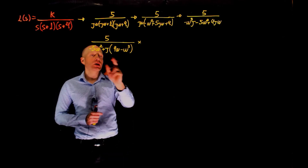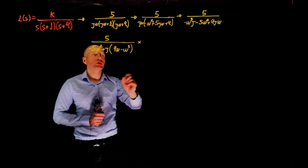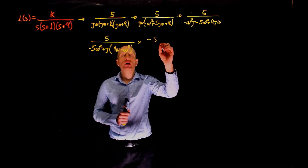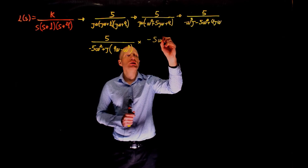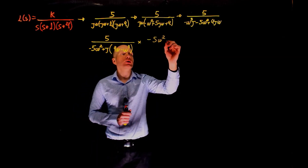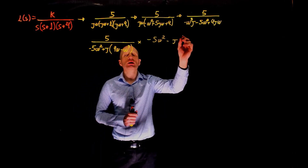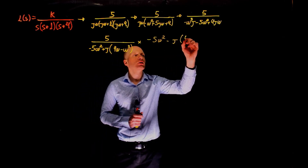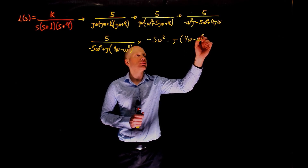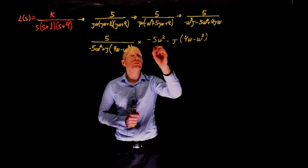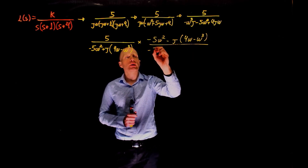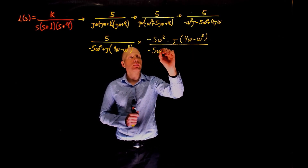To eliminate the imaginary part of the denominator, we can multiply the top and bottom of this equation by the conjugate of the denominator, which is negative j times (4 omega minus omega cubed), divided of course by the same thing.